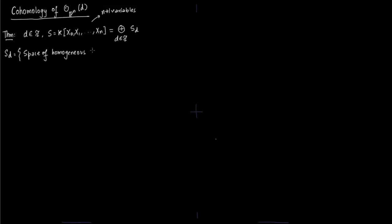SD is generated by monomials of degree d, so monomials of degree d form the basis of the space SD. In particular, notice that if d is less than 0, we take SD to be 0.